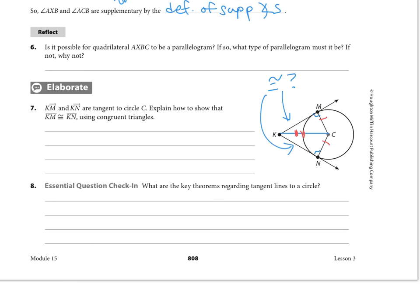And that is by our HL congruence theorem—hypotenuse KC and leg MC and NC there—the hypotenuse leg congruence theorem. And then as soon as we know the triangles are congruent, we can look at corresponding pieces. Now KM and KN, corresponding pieces are congruent once we know that the triangles are congruent.